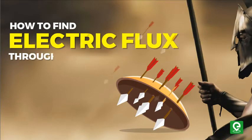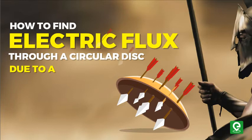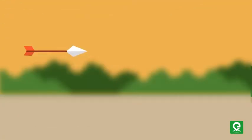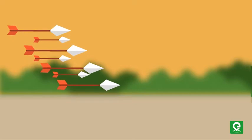How to find electric flux through a circular disc due to a point charge. Electric flux—flux simply means something coming out of a given region.